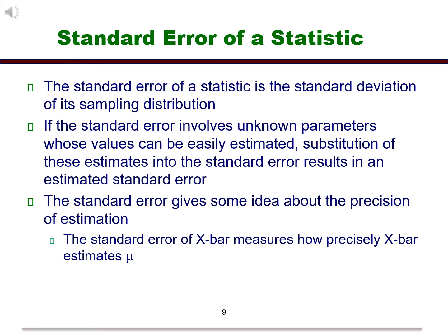The standard error of a statistic is the standard deviation of its sampling distribution. So, the standard error gives us an idea about how well we are estimating the parameter with the estimate. If the standard error involves unknown parameters whose values can be easily estimated, substitution of these estimates into the standard error result in an estimated standard error.